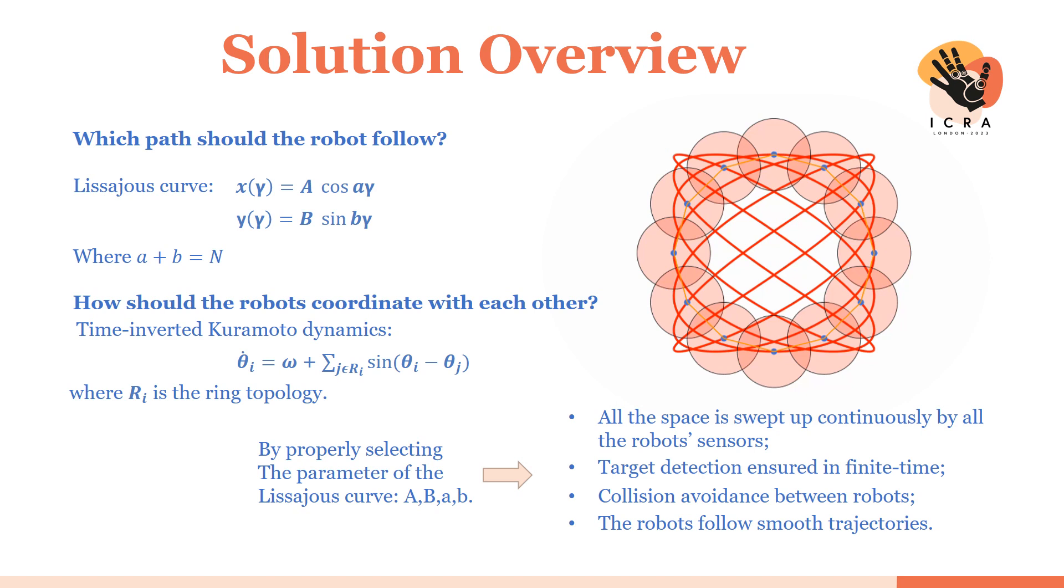We discovered that by constraining the robots to move on a family of parametric curves called Lissajous Curves and, under the constraint A plus B equal to the number of robots, by imposing to each robot what we call the time-inverted Kuramoto dynamics reported in this slide, at the equilibrium we obtain the desired collective behavior.